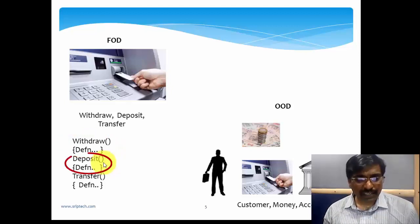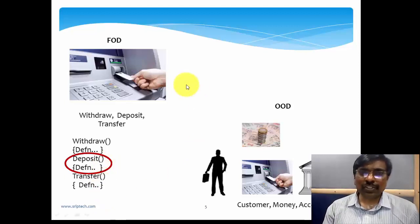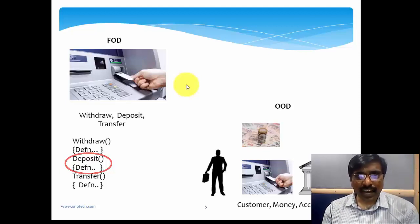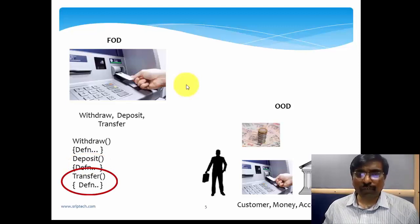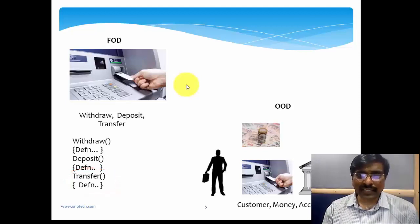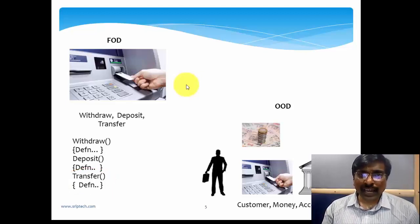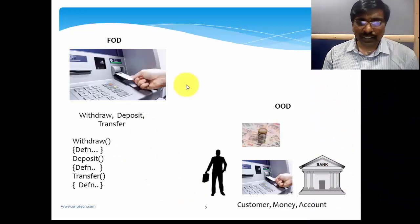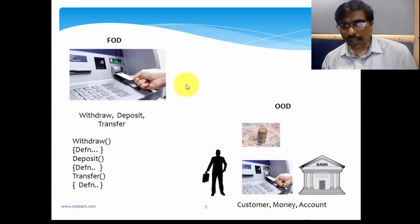Similarly, the deposit function can be broken down into smaller functions — one to accept the deposit amount and one to print the transaction slip. The transfer function can be broken into functions for accepting the beneficiary name and entering the RTGS or NEFT code. So in function-oriented design, the entire problem is divided into functions, broken into smaller sub-functions, which are then converted into software modules.